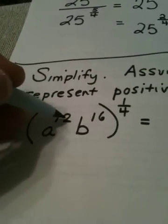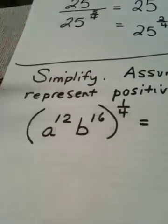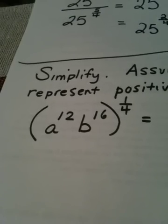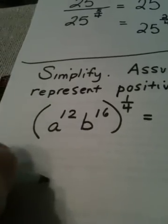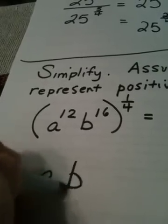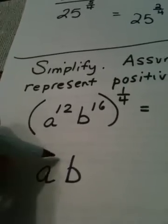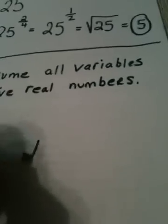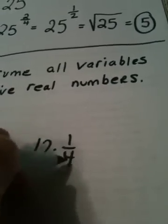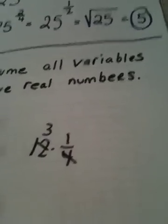When I have a power on the inside and I have a power on the outside, to get my new exponent, hopefully you remember to multiply. So the a doesn't change, and the b doesn't change. But to get the new exponent on the a, 12 times one-fourth is 3.